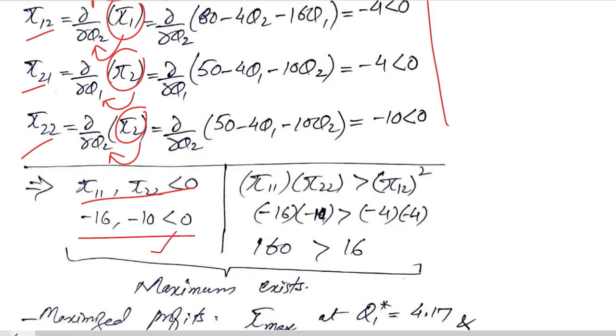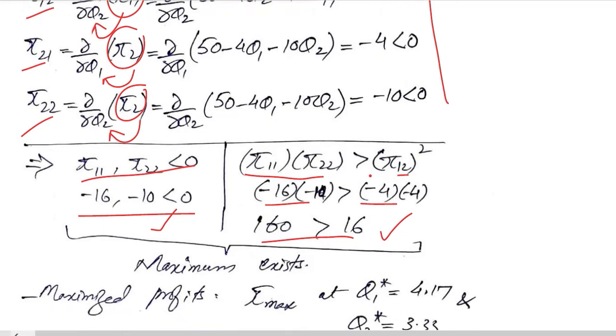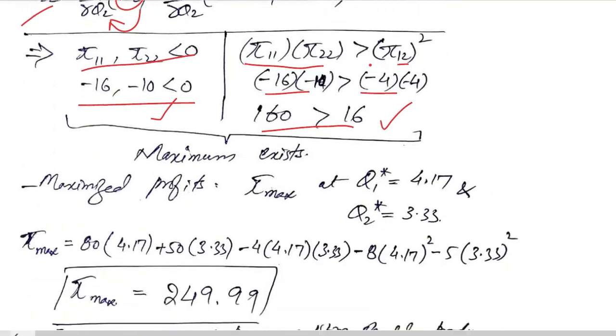And for the second part, we use this inequality, and by putting these values, you find that it is true that there is an inequality. And then the maximum exists because this is verified, and this is the condition for maximum.